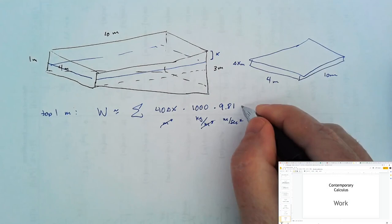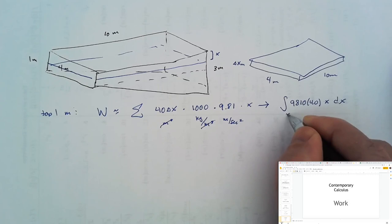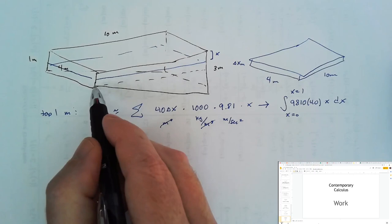then we must multiply by 9.81 meters per second squared to get newtons, and then we need to multiply by the distance that this moves. Let's call that distance x meters. This Riemann sum converges then to an integral, and we integrate from x equals zero to x equals 1 meter. This gives us the work done in lifting this top 1 meter of water out of the pool.